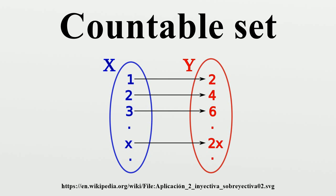For example, given countable sets A, B, C, using a variant of triangular enumeration: A0 maps to 0, A1 maps to 1, B0 maps to 2, A2 maps to 3, B1 maps to 4, C0 maps to 5, A3 maps to 6, B2 maps to 7, C1 maps to 8, D0 maps to 9, A4 maps to 10. Note that this only works if the sets A, B, C are disjoint.